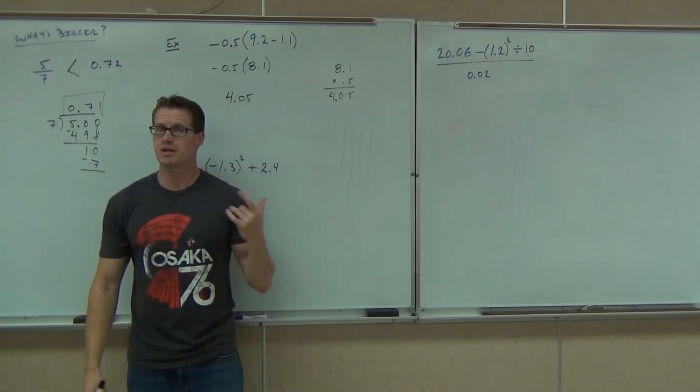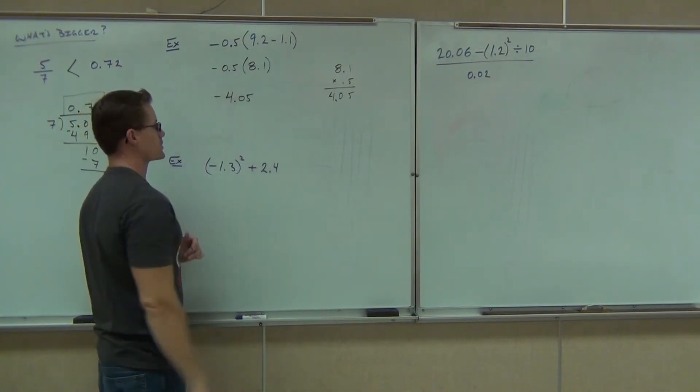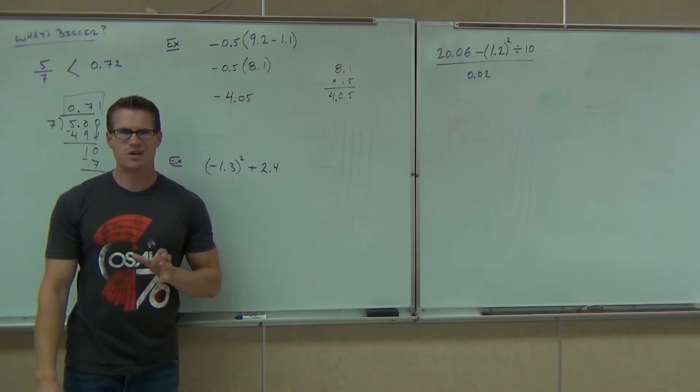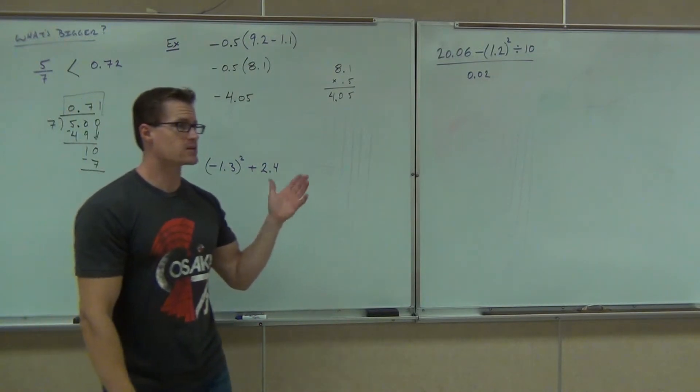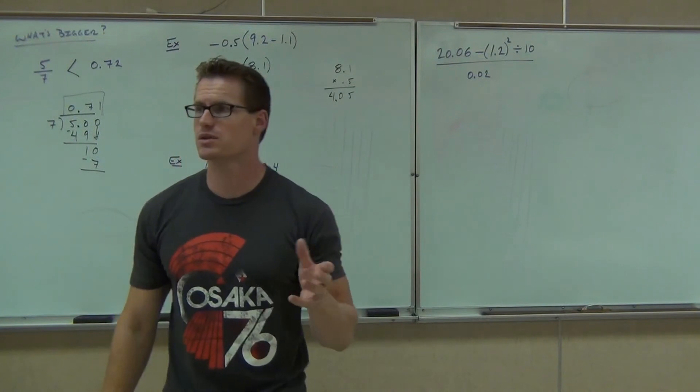So our answer is 4.05 true or false? Negative. Ah, so false. Because this had to be a negative, we're going to have negative 4.05. Are you guys okay with this? Yes. So really just combining a couple ideas. How do add, subtract, multiply, divide exponents with our operations.